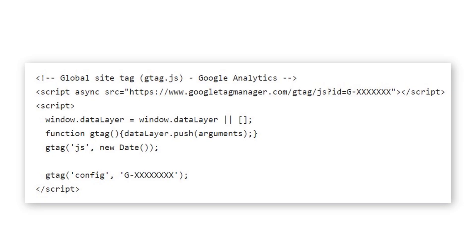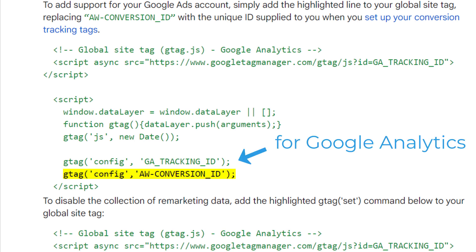However, because of various changes in the industry, Google later introduced a unified tracking code library called Global Site Tag, or G-Tag in short. G-Tag is designed for Google's products such as Google Analytics or Google Ads. Instead of having different tracking codes and libraries for each tool, you can now have one code and use it to send data to multiple platforms.